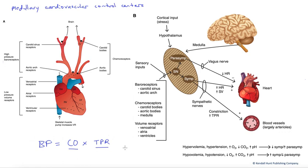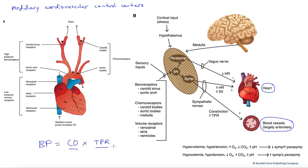This equation points us to the two effector tissues of blood pressure regulation: the heart for control of cardiac output, and the small blood vessels — the arterioles — for the regulation of total peripheral resistance. Total peripheral resistance is not regulated entirely for maintenance of blood pressure. We actually have local metabolic regulation of these blood vessels to maintain perfusion of tissues based upon need. For example, during exercise, we would get local metabolic effects that would immediately cause vasodilation of those blood vessels, enhancing blood flow to those tissues.